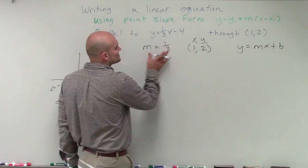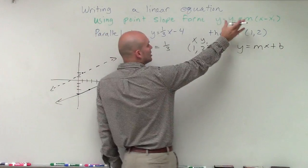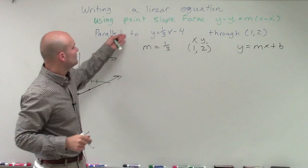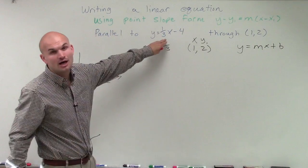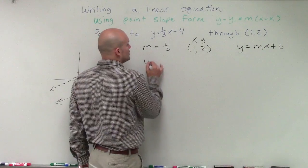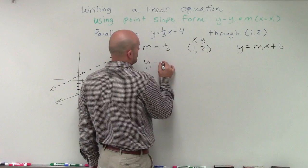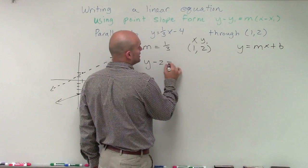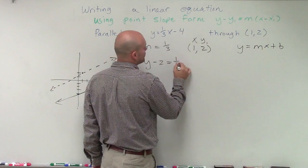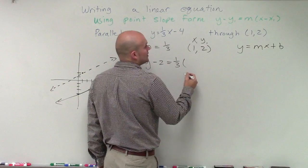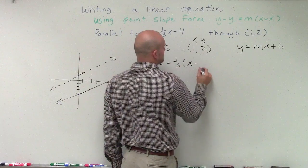But now that I have the slope and a point, I can easily plug them into our point-slope form to find an equation that's going to be parallel to this line. So y minus y1, which is 2, equals m, which is 1 third, times x minus x1, which is 1.